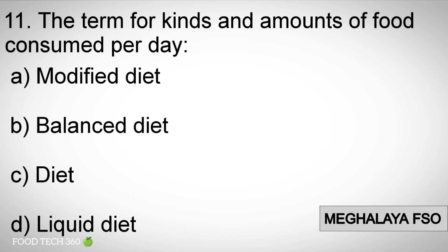Question number eleven: The term for kinds and amounts of food consumed per day. Options: A) Modified diet, B) Balanced diet, C) Diet, D) Liquid diet.